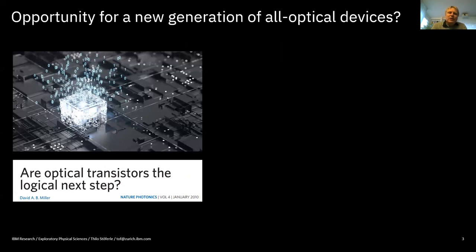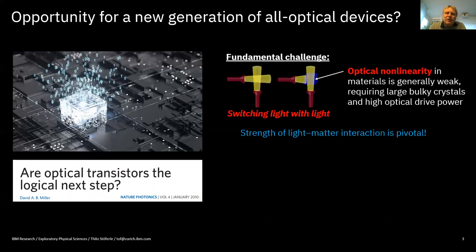This is why we are looking for a paradigm change and exploring opportunities to revisit all-optical devices. There was a provocative article from David Miller in 2010 in Nature Photonics: 'Are optical transistors the next logical step?' Of course, there's a fundamental challenge: we don't have optical transistors even after many decades of research. The reason is you always need a piece of matter to mediate the interaction between light beams, and the optical nonlinearity in materials is generally very weak, requiring large bulky crystals and high optical drive power.